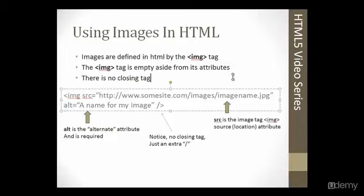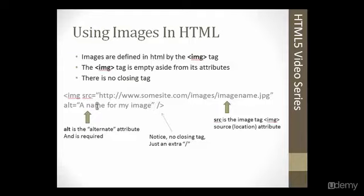Another needed attribute is the alt attribute. The alt attribute gives the image a text title. It differs from the title attribute in that it's not a tooltip — it doesn't appear on hover. What it does is if your image is not found, this text will display instead. For example, if you have a logo on your webpage but the server can't find the image, you could have your company name as the alt text so it would display the name rather than just being blank.